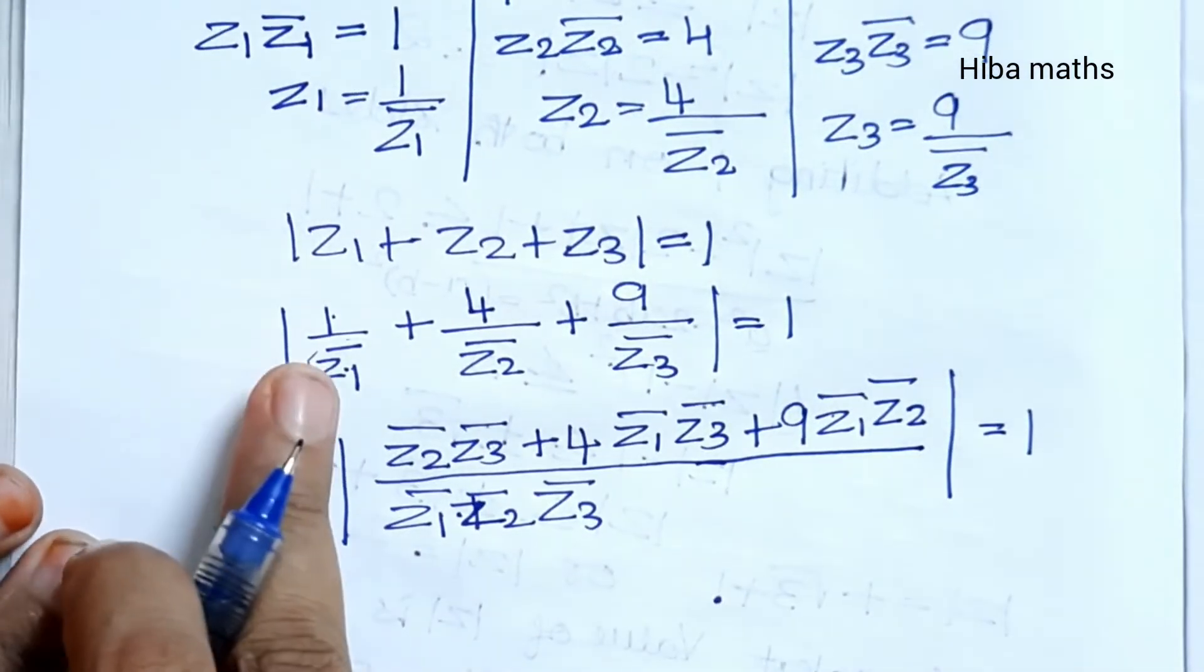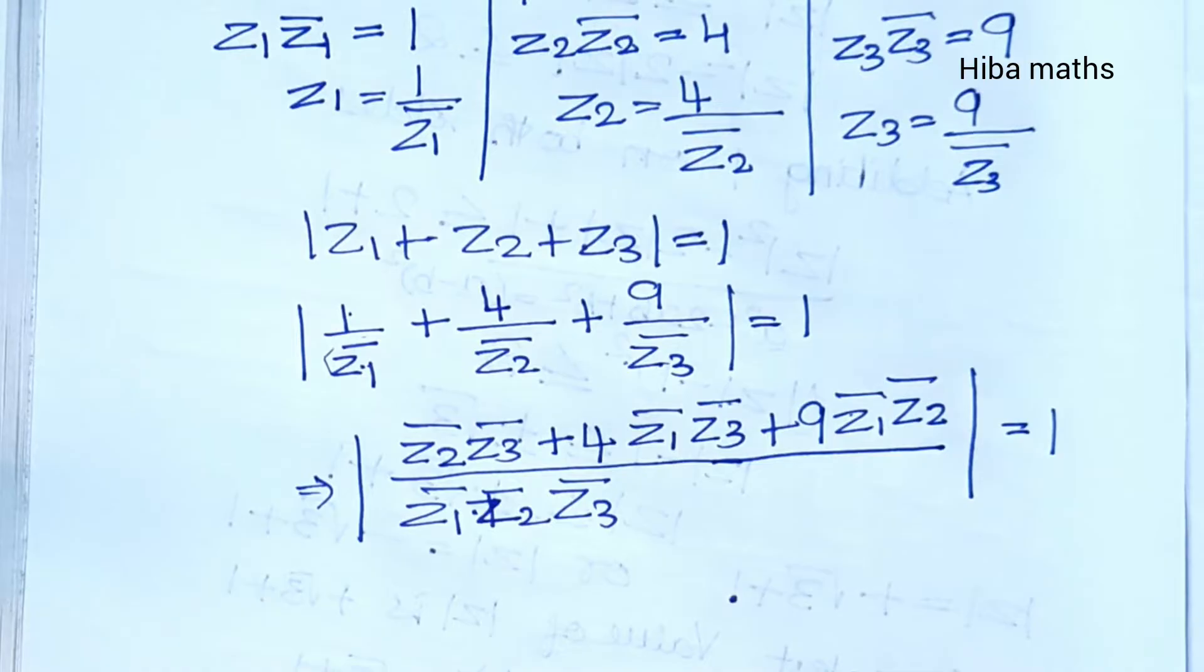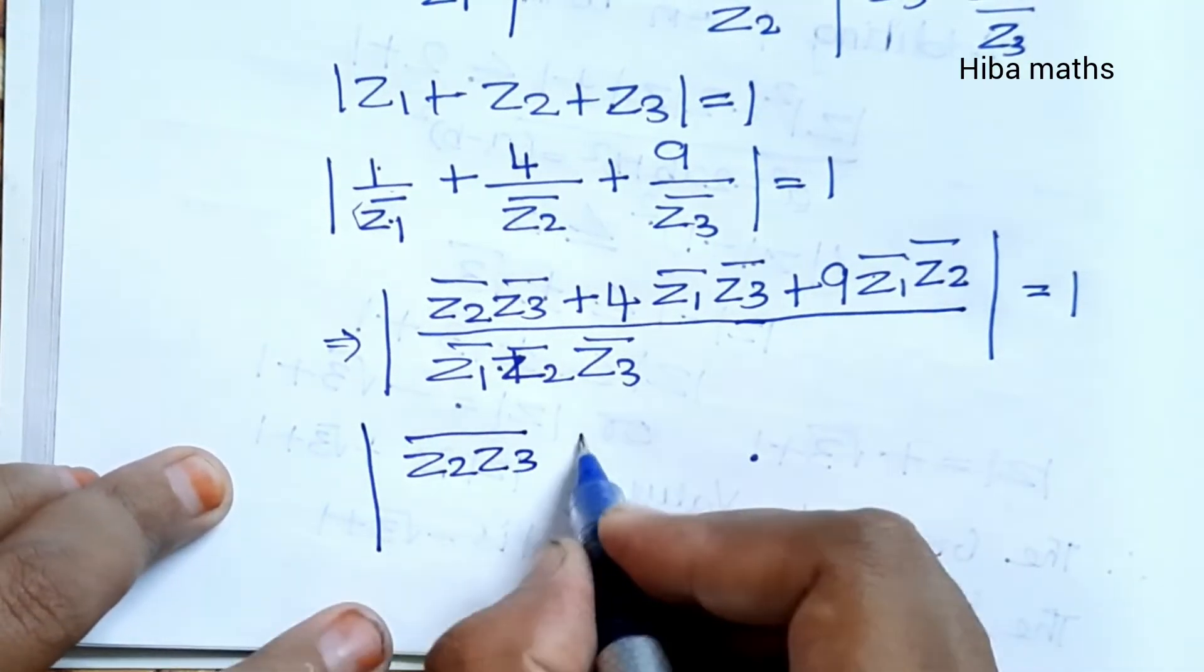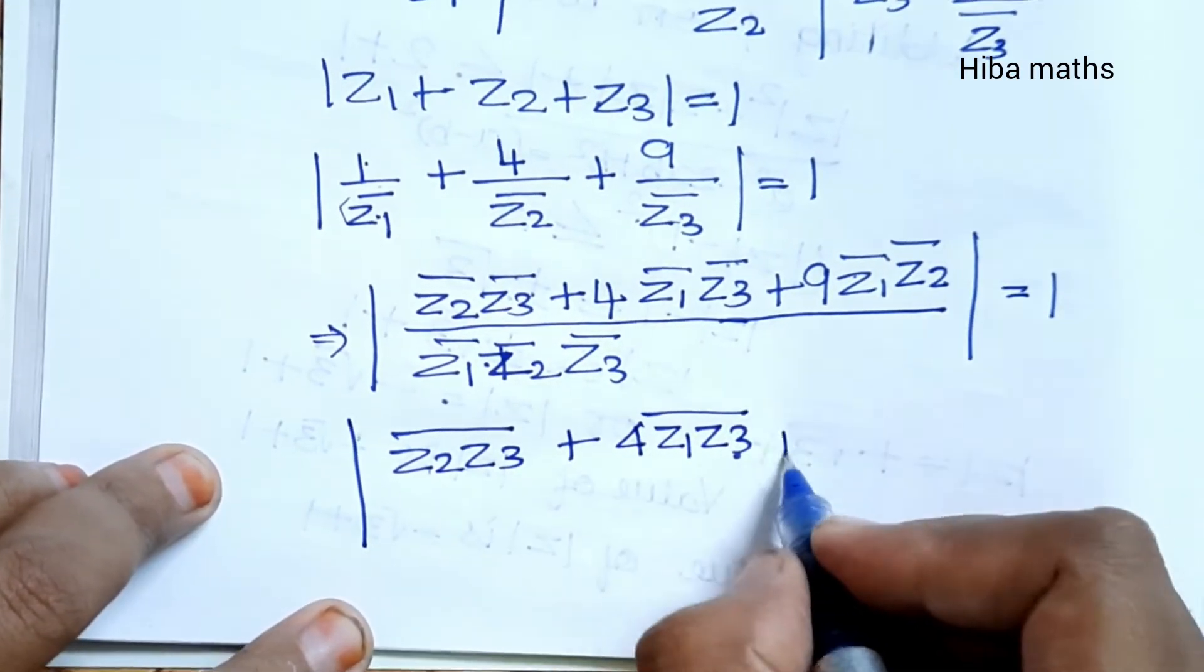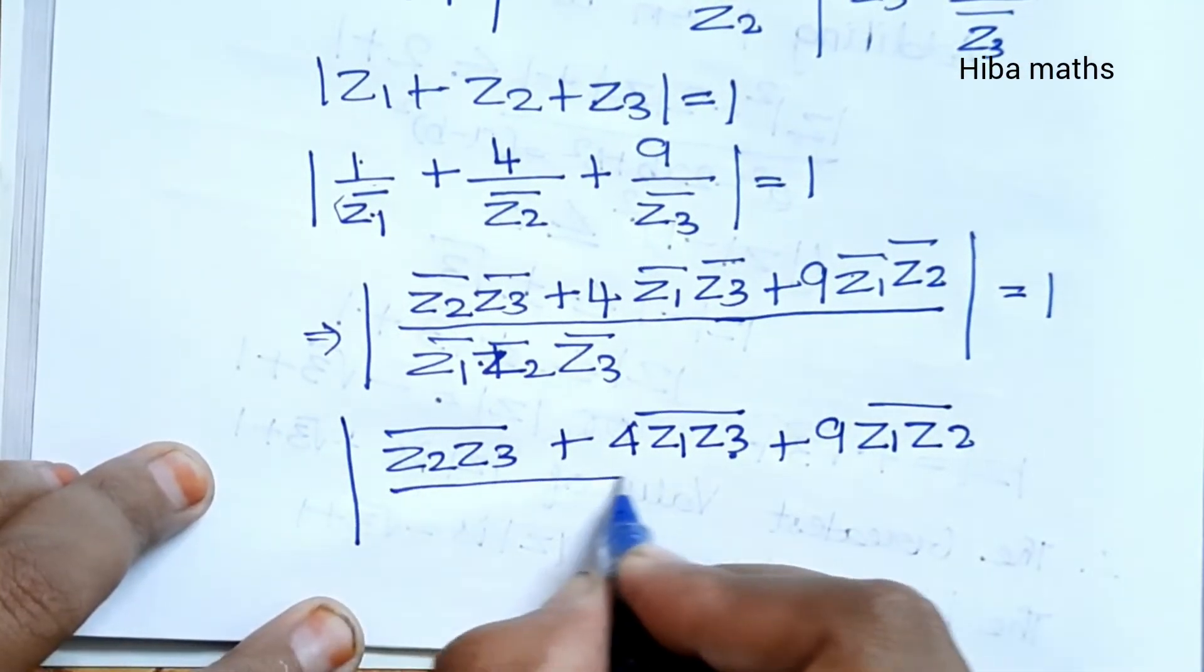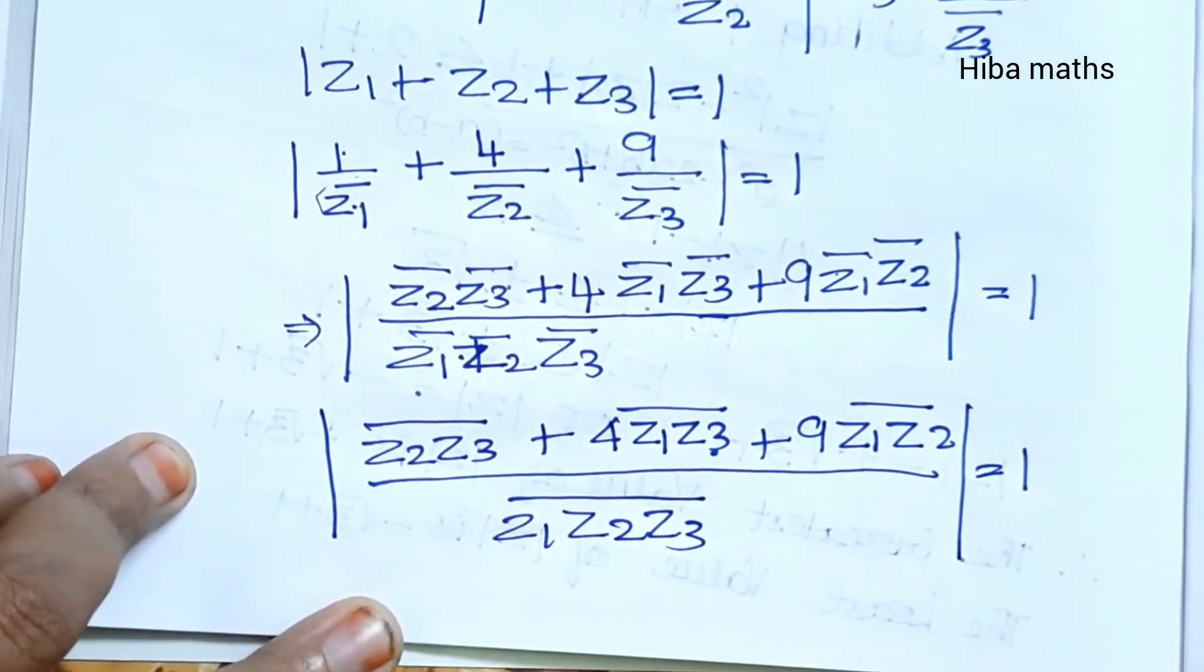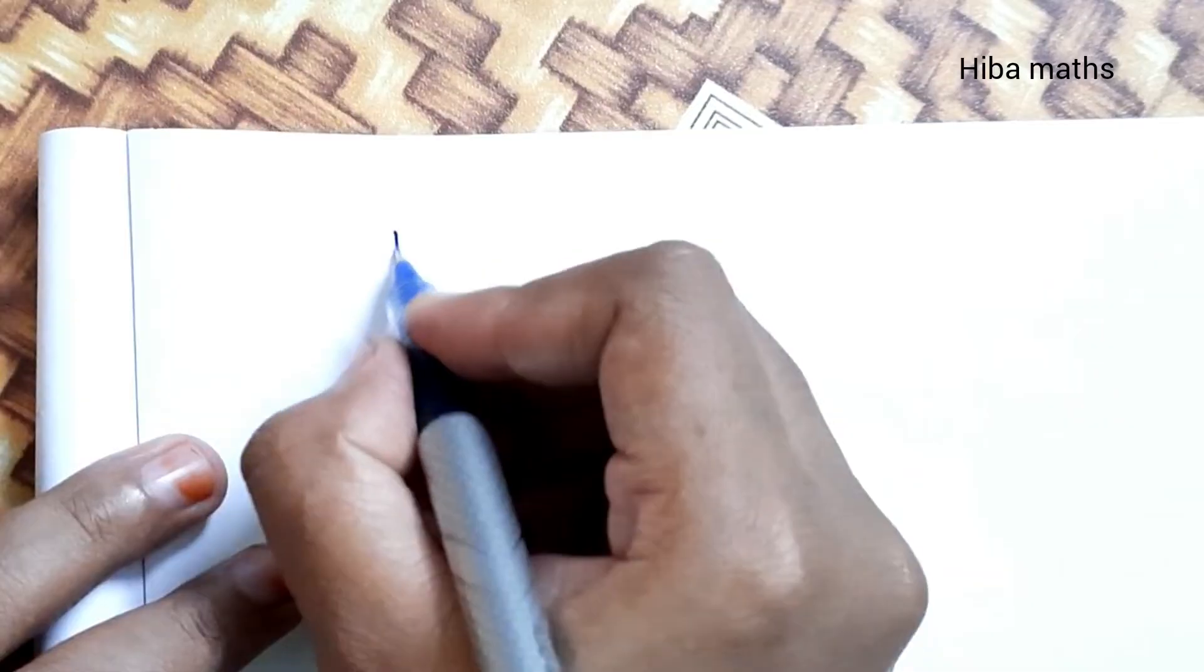Now taking modulus of Z1 plus Z2 plus Z3 equals 1. Squaring: Z2Z3 bar plus 4Z1Z3 bar plus 9Z1Z2 bar divided by Z1Z2Z3 bar, that is equal to 1.